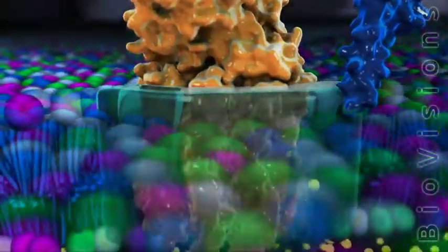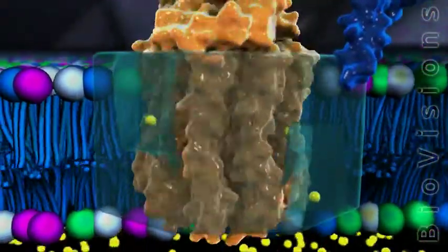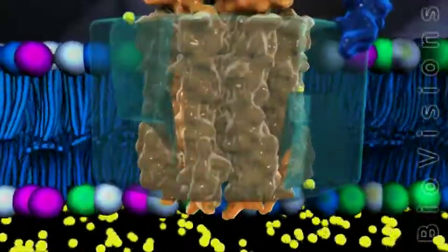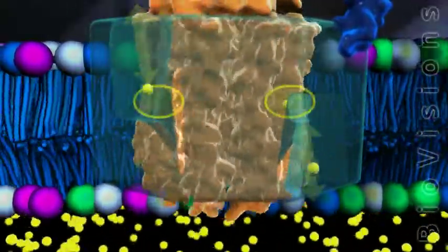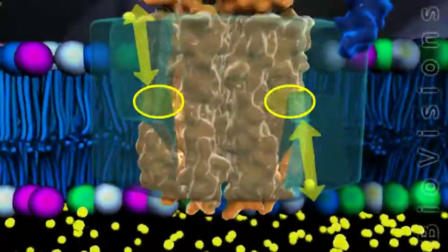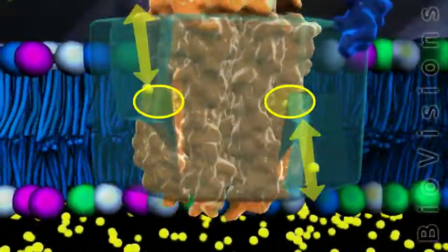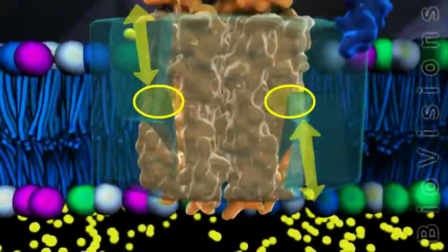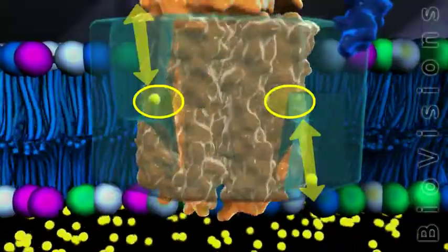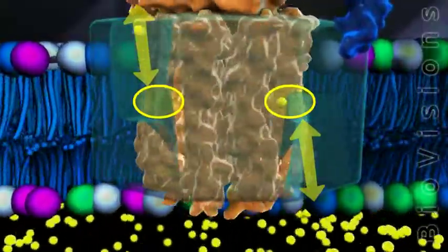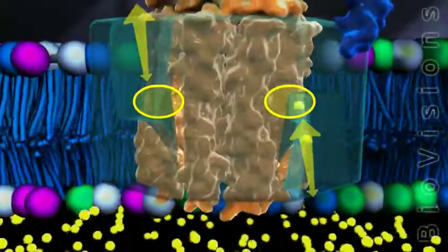Each of the nine C subunits in the C ring has a proton binding site, but proton exchange only occurs at those positions indicated with arrows. Since there are far more protons in the inner membrane space than in the matrix, the rightmost subunit is more likely to be proton bound than the leftmost subunit.